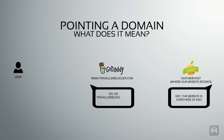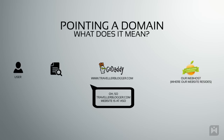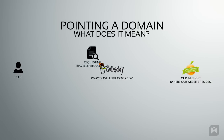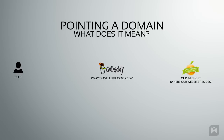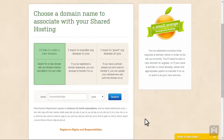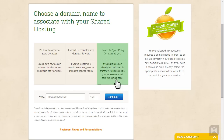GoDaddy will then know that in the future, if a user requests that particular domain, GoDaddy should forward that request onto A Small Orange. Then A Small Orange will point the user in the right direction. How does A Small Orange know where our website is? You'll recall that when we signed up for web hosting we specified our domain. That particular step instructed A Small Orange that if it gets a request for that domain, this is where the website is.